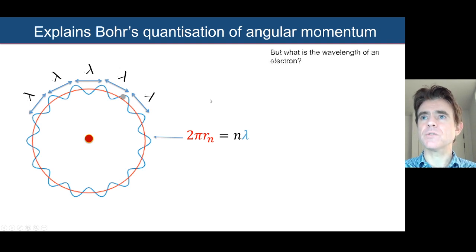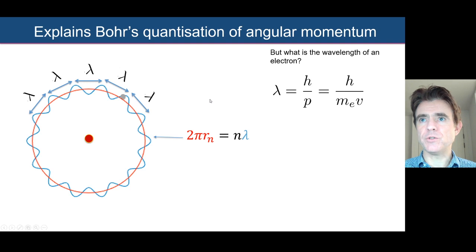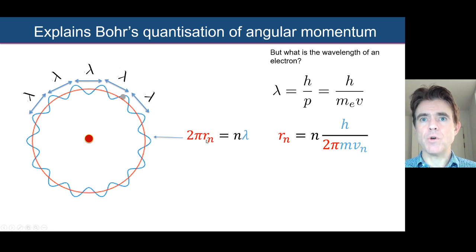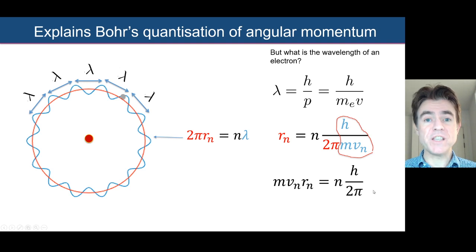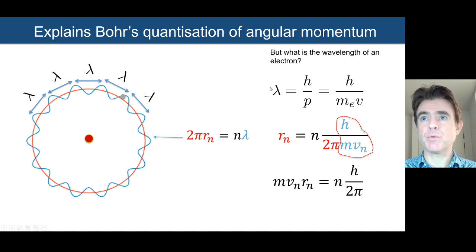Using de Broglie's equation, the wavelength is simply Planck's constant divided by the momentum. Combining this with 2πR = nλ, we get Rn = nλ/2π = nh/(2π × mv). We can see immediately that this gives exactly the quantization of angular momentum that Bohr had postulated, fitting beautifully with de Broglie's wave-particle duality and his proposal of λ = h/p.